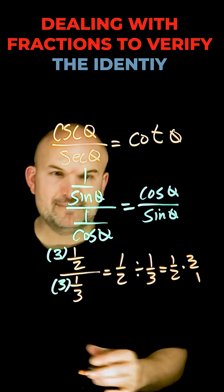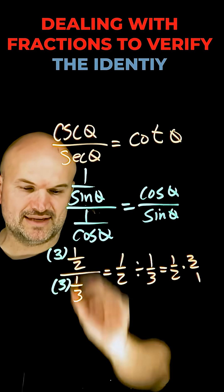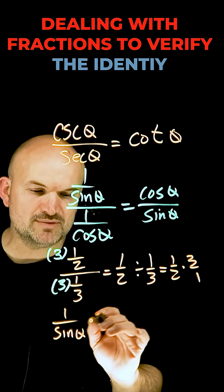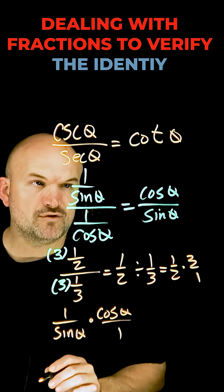So in this example, if I want to rewrite this as 1 over sine of theta instead of divided by 1 over cosine, I can multiply it by cosine of theta over one.